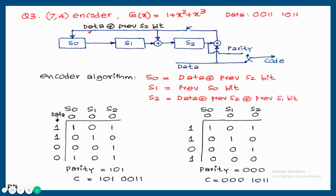Make all the standard connections. Once the connection is made, verify between LSB and MSB which x term is present — here it is x². So if x² is present, XOR is needed between S1 and S2. If x were present instead, XOR would be needed between S0 and S1. The algorithm is then written from the block diagram. Note that data 0011 means the rightmost bit enters first — this is an area where mistakes commonly happen.